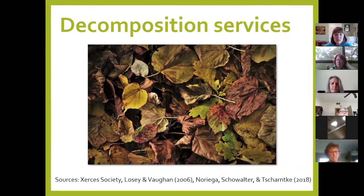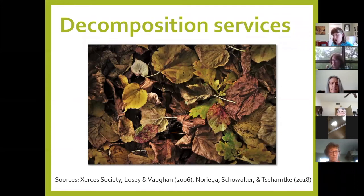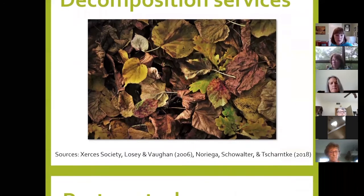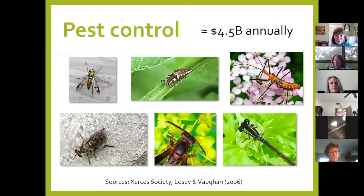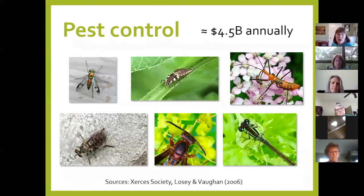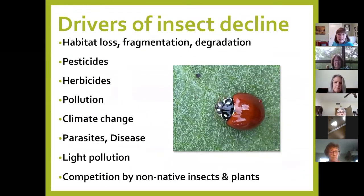We also rely on insects for decomposition services — they convert dung, even carrion, break down plant matter, and when they die, release nitrogen and other nutrients into the soil. We rely on them for pest control, worth about $4.5 billion annually, through predators that eat other insects, or parasitoids where the female lays an egg inside another insect and it eats from the inside out. In our gardens, one reason we haven't had to use pesticides is that we have a lot of biodiversity. As Dr. Tallamy says: if you have an insect pest problem, you need more insects.